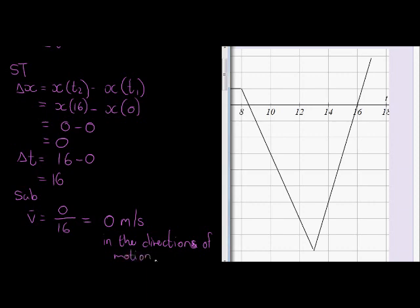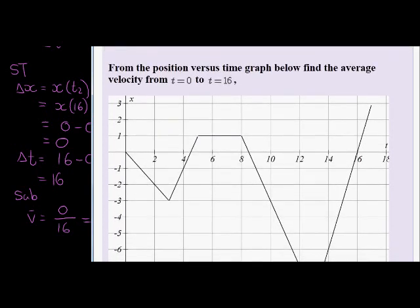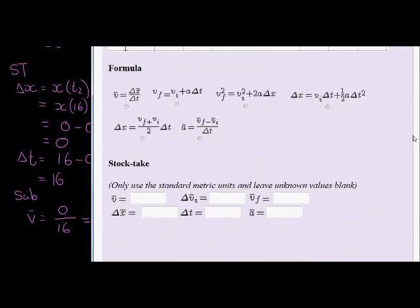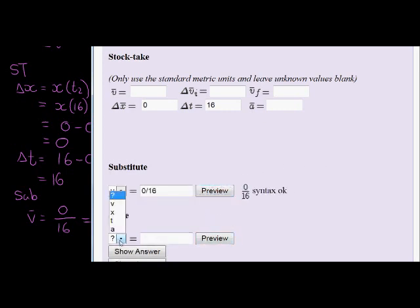Cool, let's go input our answers. So here we go, the formula we're still using. We went to work out the displacement, the displacement was zero. The time was 16 seconds. So when we substitute to find the average velocity, we had zero divided by 16. Always preview just to make sure, and that gave us v is equal to zero.